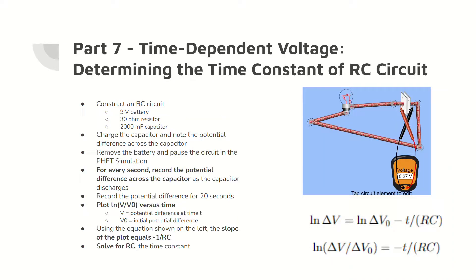In part seven, an RC circuit with the components shown on the slide was constructed. The circuit was then closed to allow the capacitor to charge. Then, the battery was removed and the circuit was closed again to allow the capacitor to discharge.